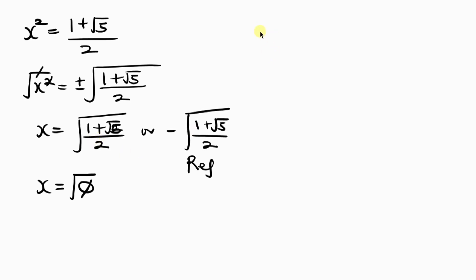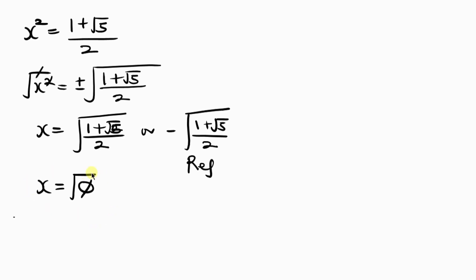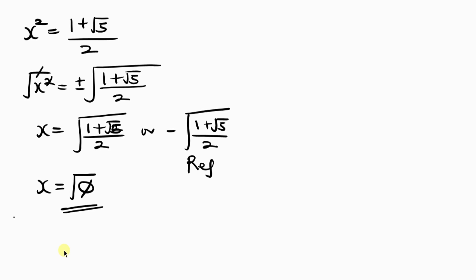Now let's look at the other value of P: 1 minus the square root of 5, all over 2. Notice that this value of P is negative, and when substituted it gives a complex value for X. But we are only focused on real values of X, not complex values. So the only answer we have is X equals the square root of the golden ratio. And there you have it! Feel free to share your ideas in the comment section below. If you enjoyed this video, give it a thumbs up, subscribe, and turn on the notification bell so you don't miss upcoming videos. Until next time, take care.